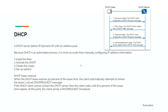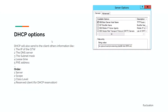Remember: when the DHCP lease reaches 50% of the lease time, the client automatically attempts to renew it — this is a unicast DHCP request. If the DHCP client cannot contact the server, it waits until 85% of the lease time expires, at which point the client sends a DHCP request broadcast.